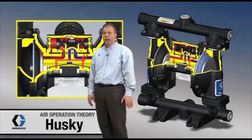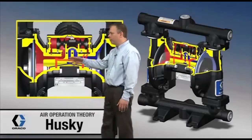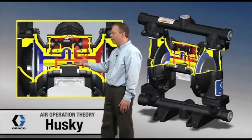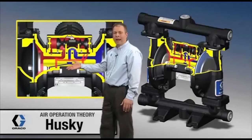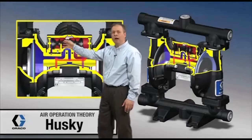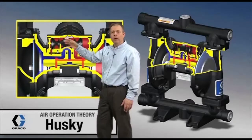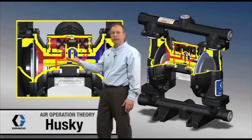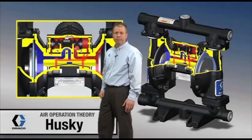Basically what's going on is we're putting air pressure on one side and vent on the other. The diaphragms come in contact with the poppet valves, and that action causes the spool valve up in this module to move back and forth — all it's doing is directing air pressure and vent from one diaphragm to the other.